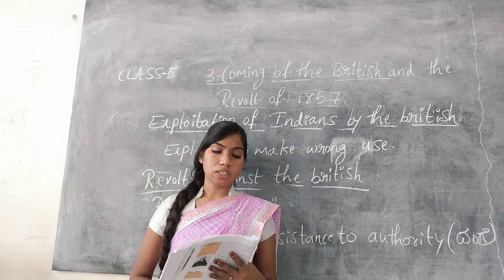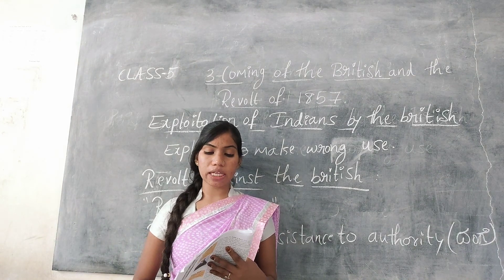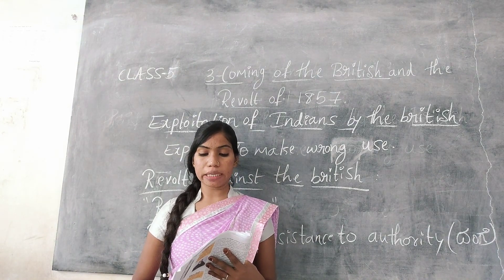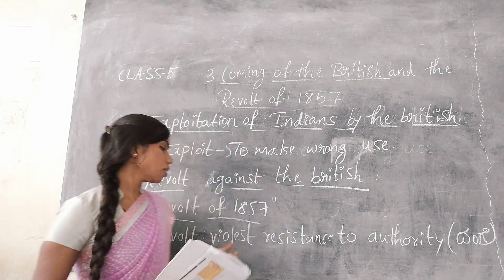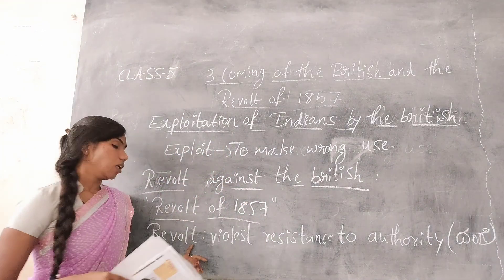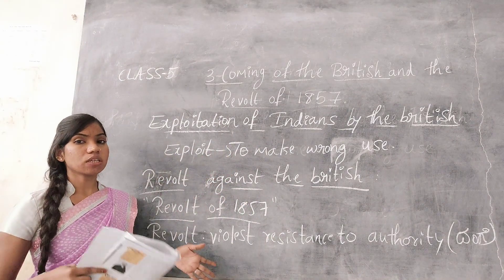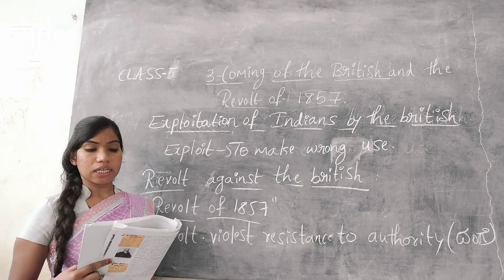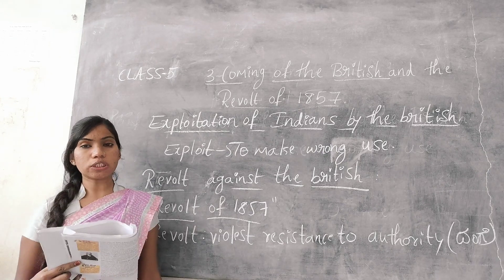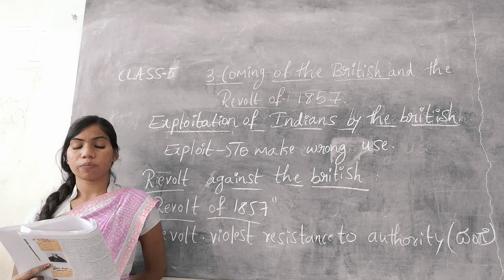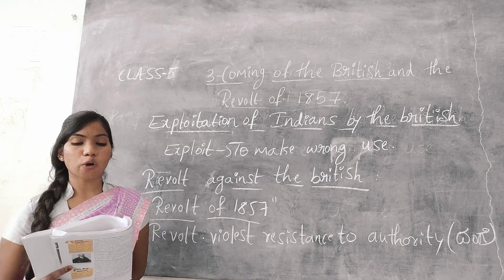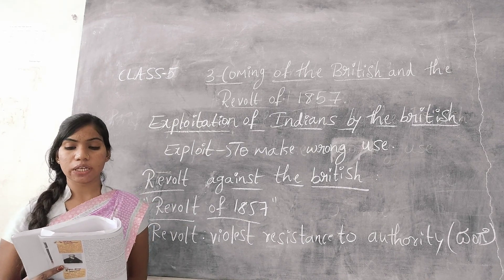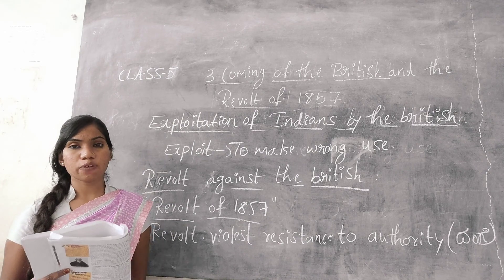The revolt was started by the Indian soldiers in the British army. The reason for the revolt was the introduction of the Enfield rifle.